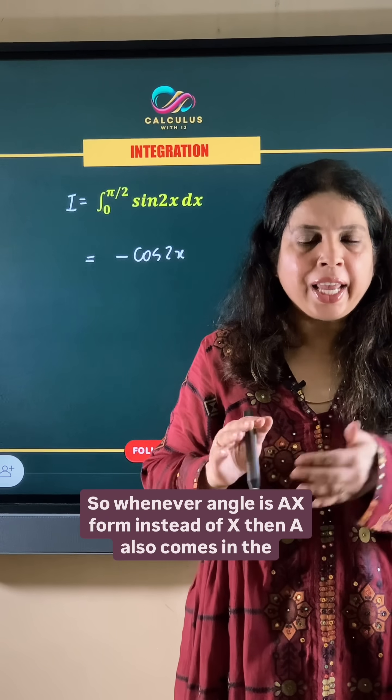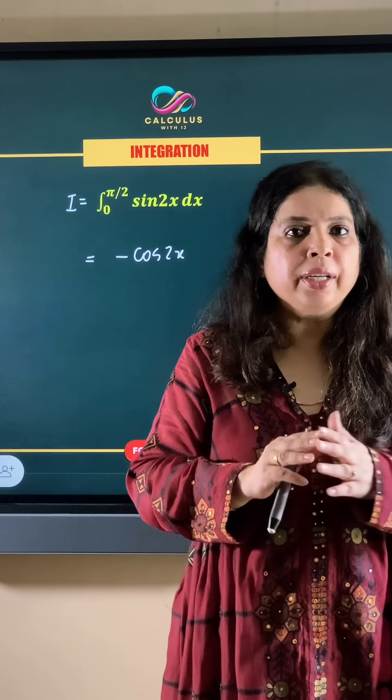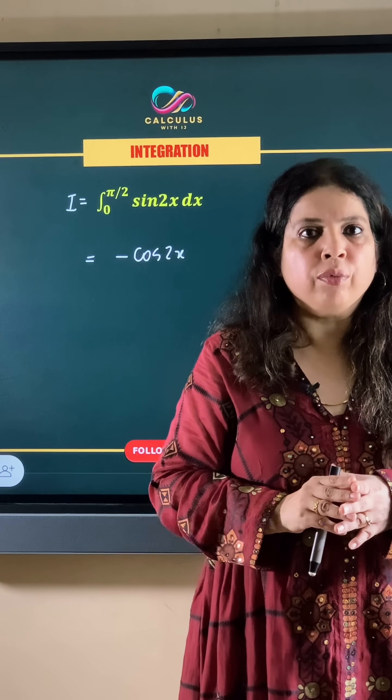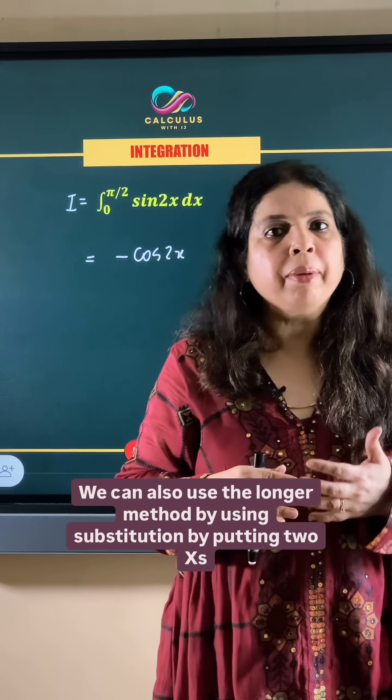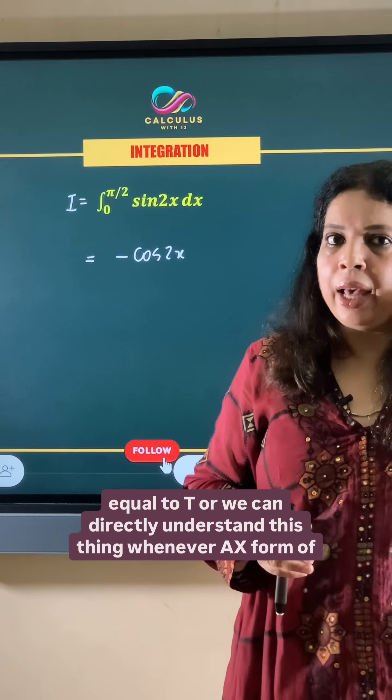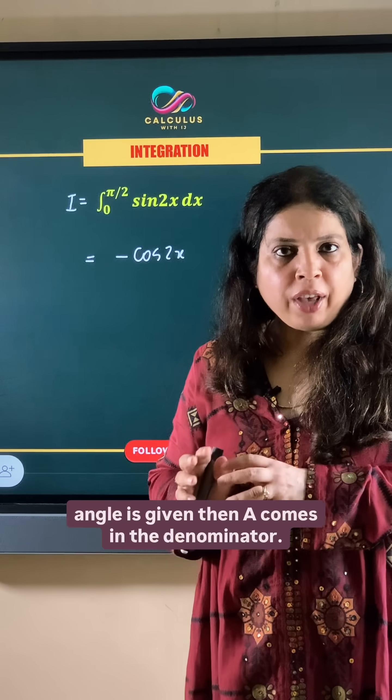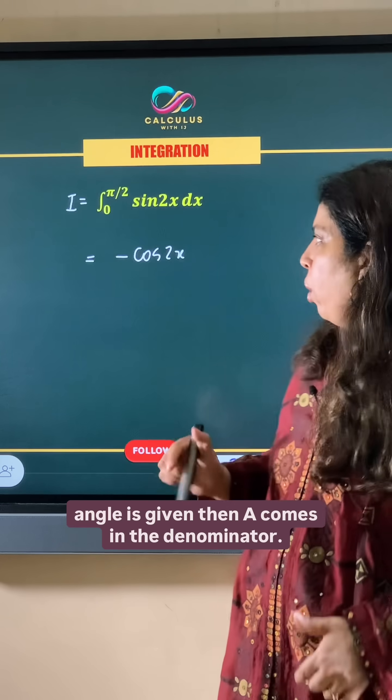So whenever the angle is in the form ax instead of x, then a comes in the denominator by rules of integration. We can also use the substitution method by putting 2x = t, or we can directly understand this: whenever an angle is in the form ax, then a comes in the denominator.